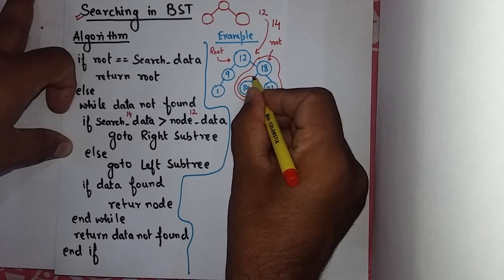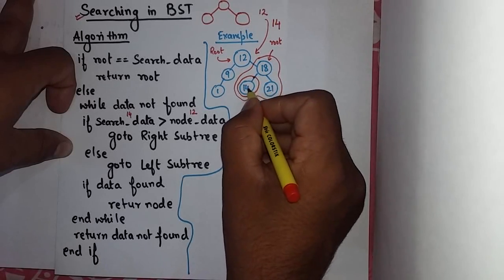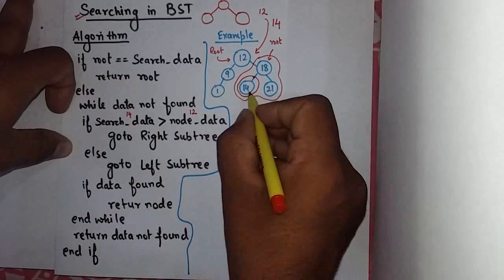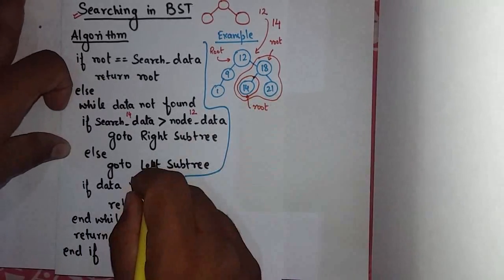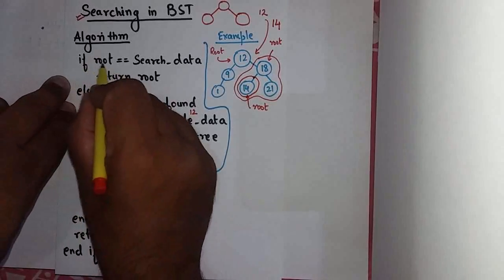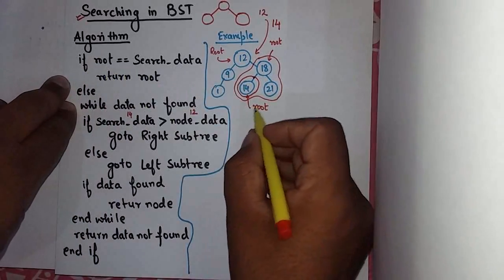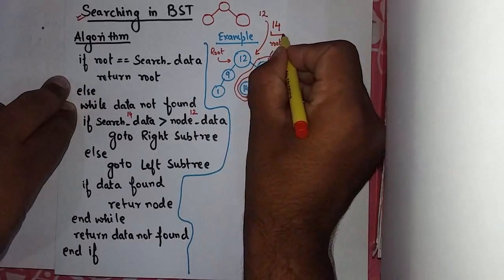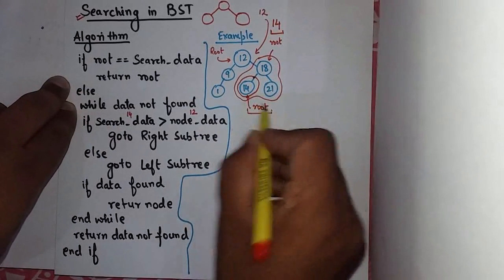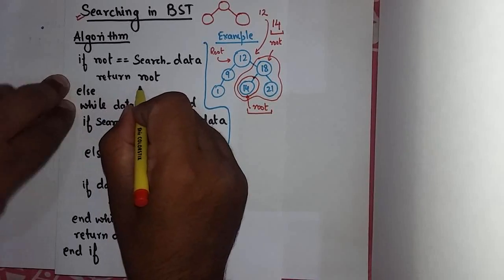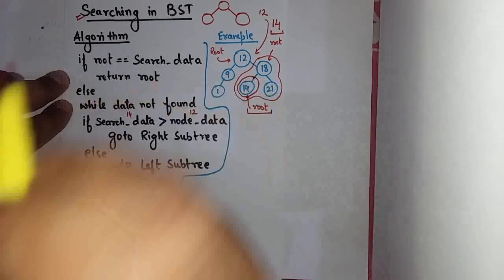Now root is what in this case? After 2 traversals, root is this. If root is equal to search data, yes, I have been searching 14 and my root is currently 14. So it will return the value of the search item.